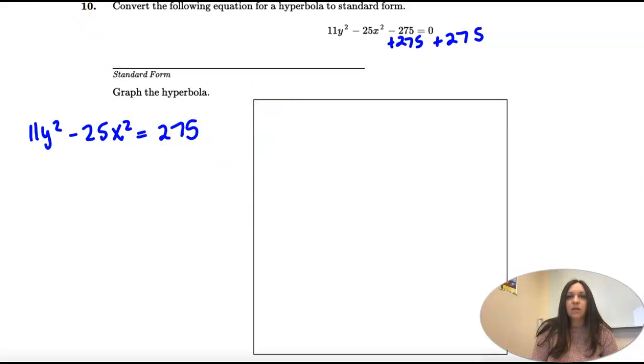Alright, so now on all of our equations, they equal 1. So we need this to equal 1. So we're going to divide by 275. And what we do on 1, we have to do to all.